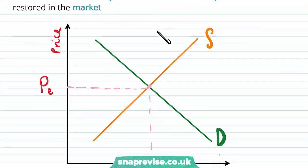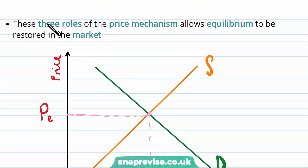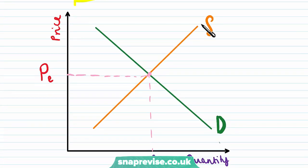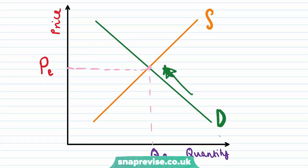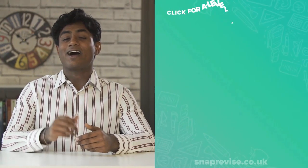Because of these three roles of the price mechanism, this allows the equilibrium to be restored to the market. We eliminate any excess demand and supply and we move back to our equilibrium point.